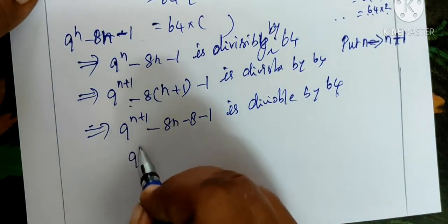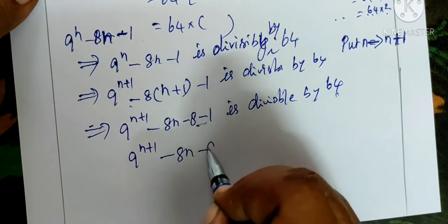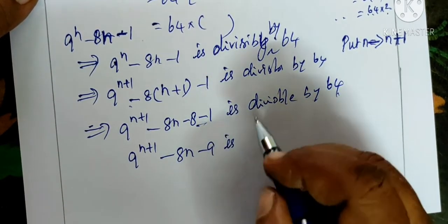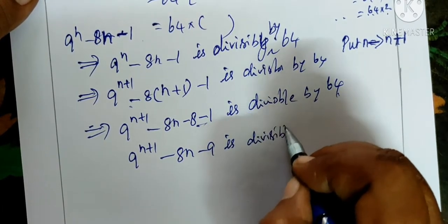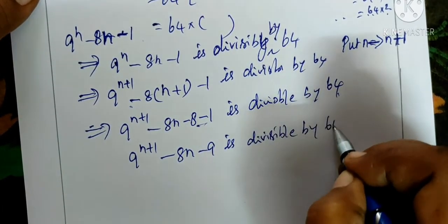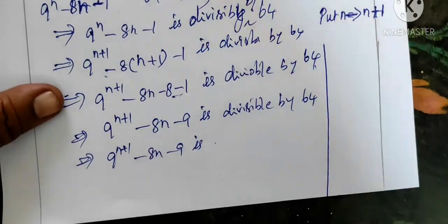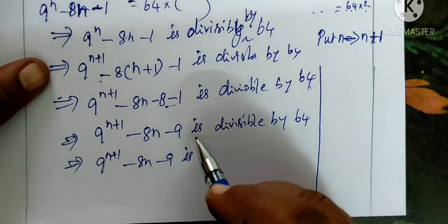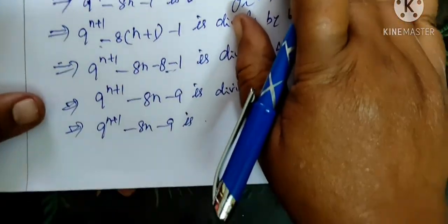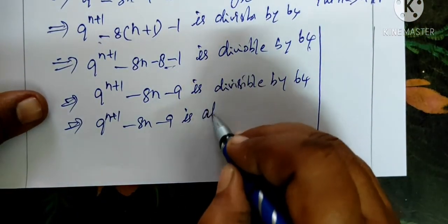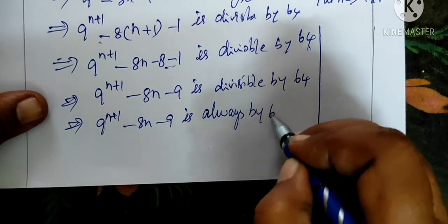This implies 9 power n plus 1 minus 8n minus 8 minus 9 is divisible by 64. So 9 power n plus 1 minus 8n minus 9 is always divisible by 64.